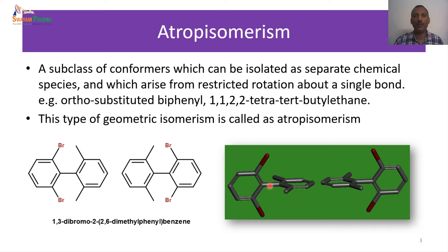The biphenyl unit — we already know that an aromatic ring is a planar molecule. In unsubstituted biphenyl, this is also a planar molecule. The moment we introduce ortho substitution into the phenyl ring, we introduce some steric constraint, and due to that, the free rotation about the carbon–carbon single bond is reduced. Let us look at this molecule represented in a two-dimensional way before moving to three-dimensional representation.